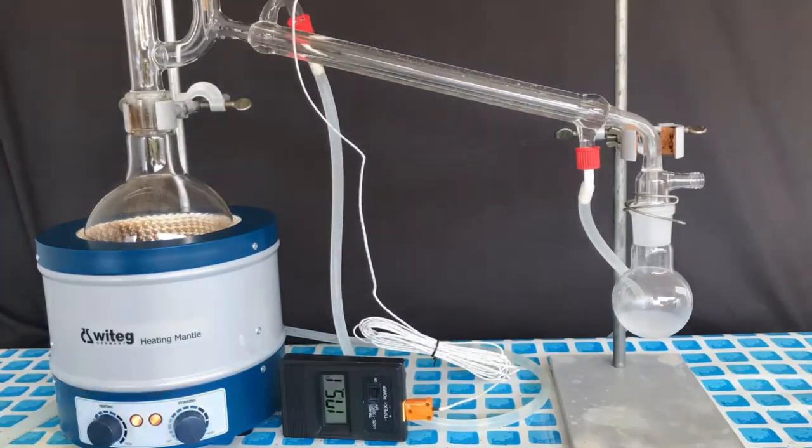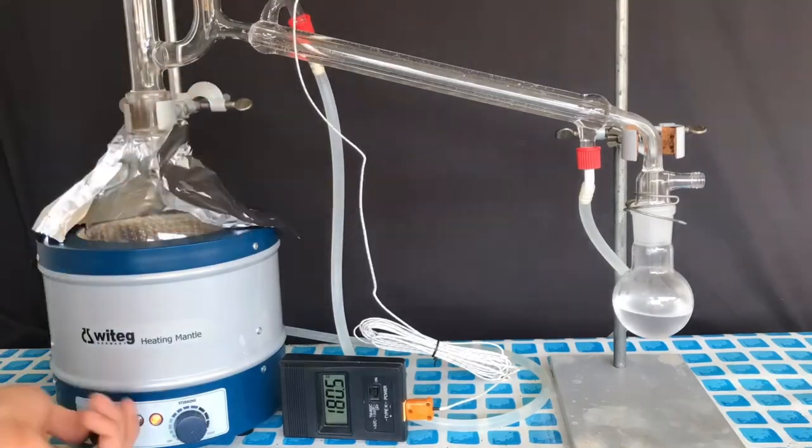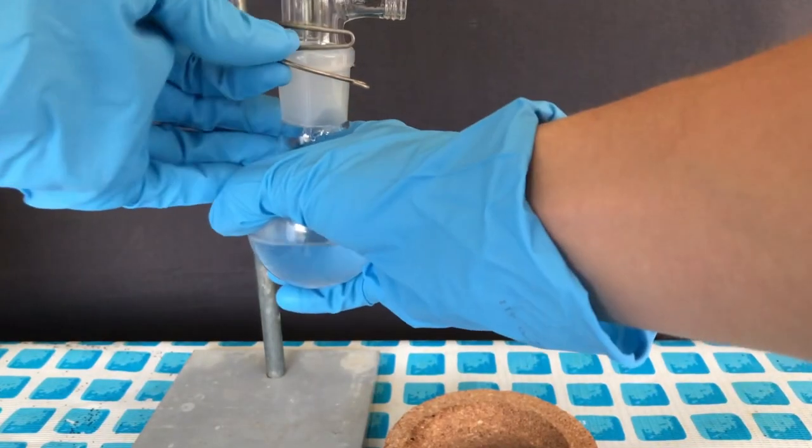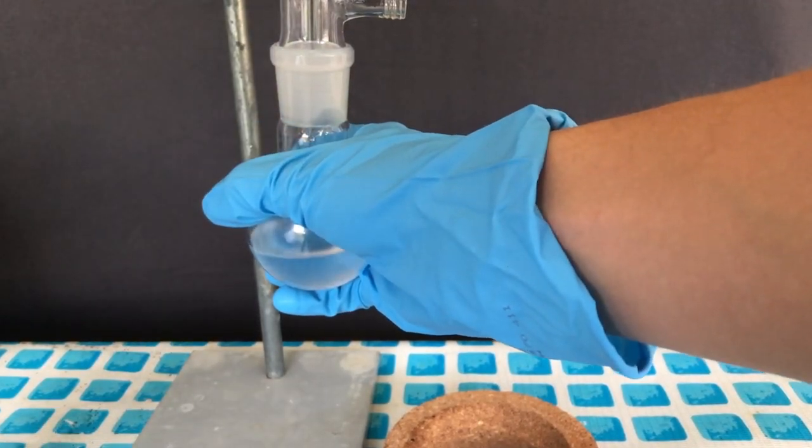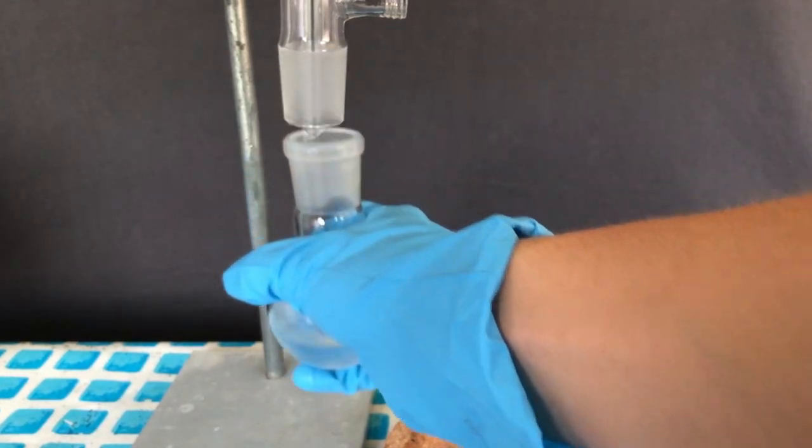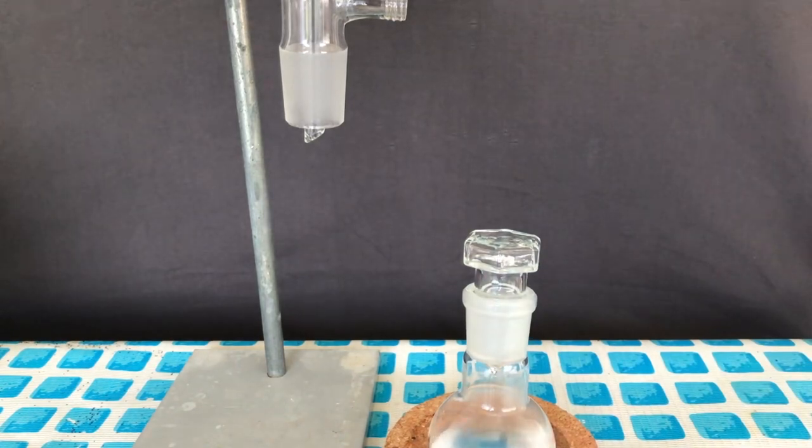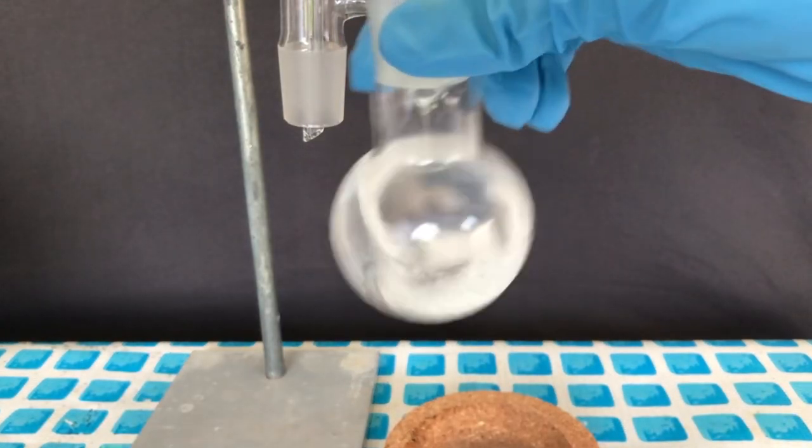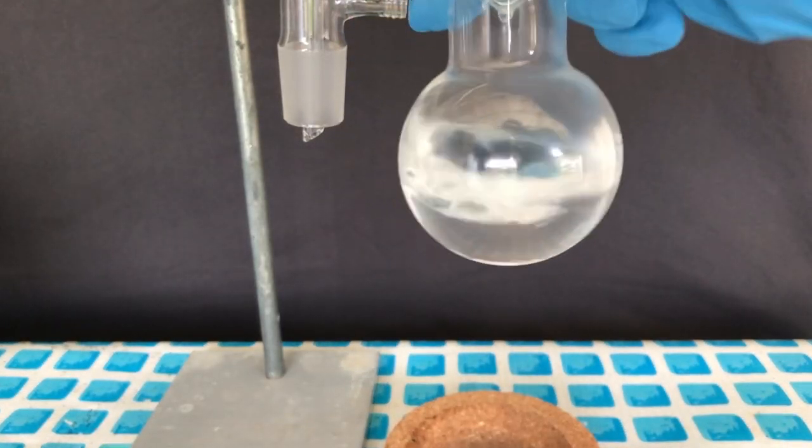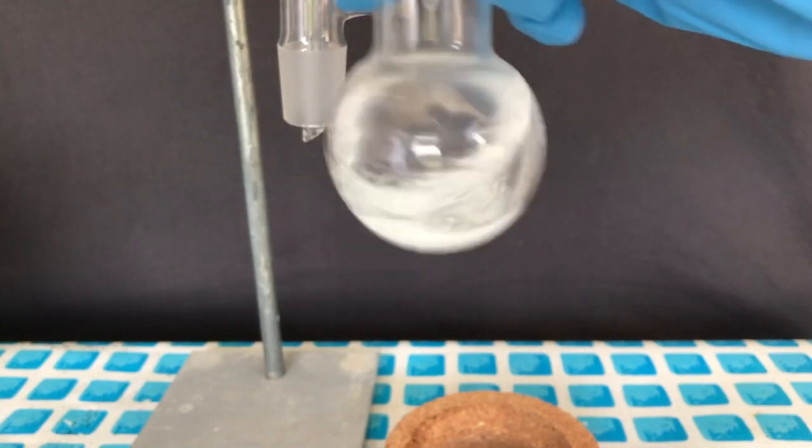The benzyl chloride coming over still contained some water as it looks a little opaque. This can easily be fixed though. After disconnecting the receiving flask, anhydrous calcium chloride was added as a drying agent and the product obviously cleared up. All the water has now been removed as indicated by the perfect clearness of the benzyl chloride.